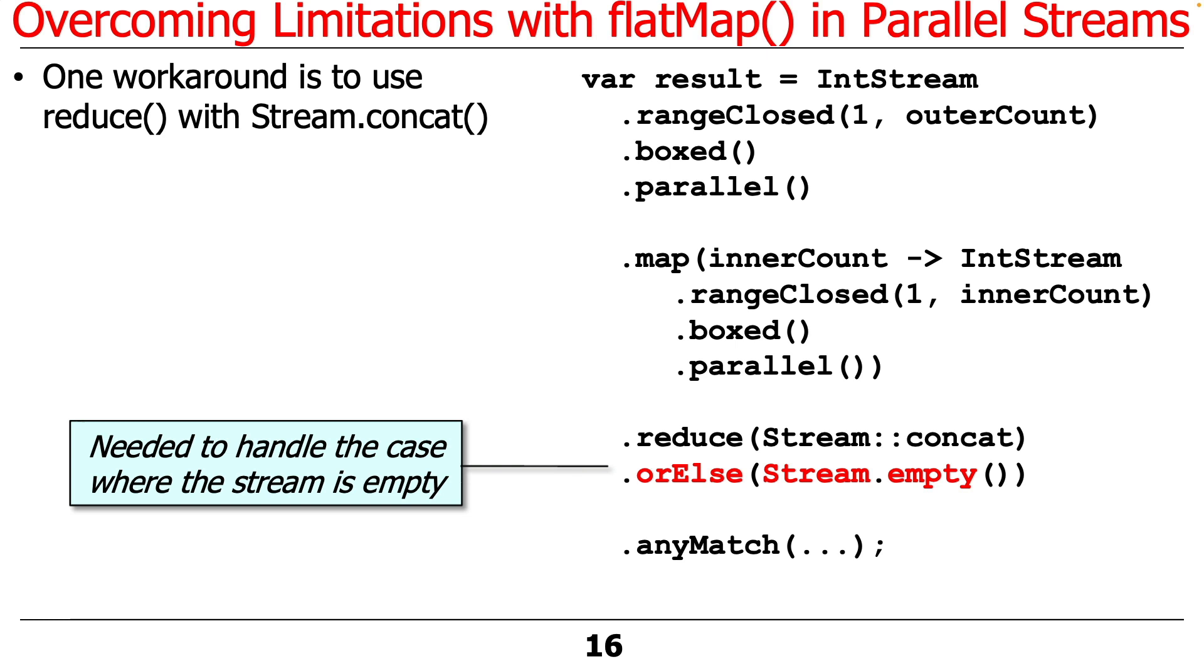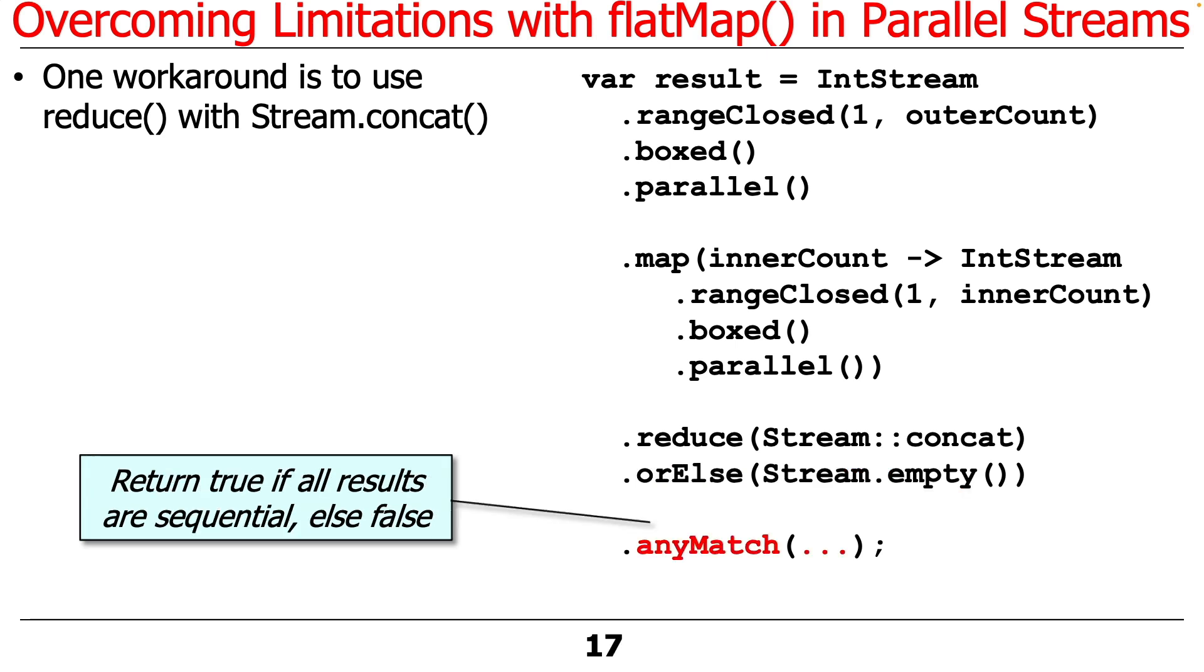So we have to put this here syntactically. And then the final thing we do is we return this anyMatch. anyMatch is a terminal operation that will return true if anything matches the predicate which I've omitted. And you'll see when we look at the case study that this is checking to see whether everything here ran sequentially or whether something ran in parallel.